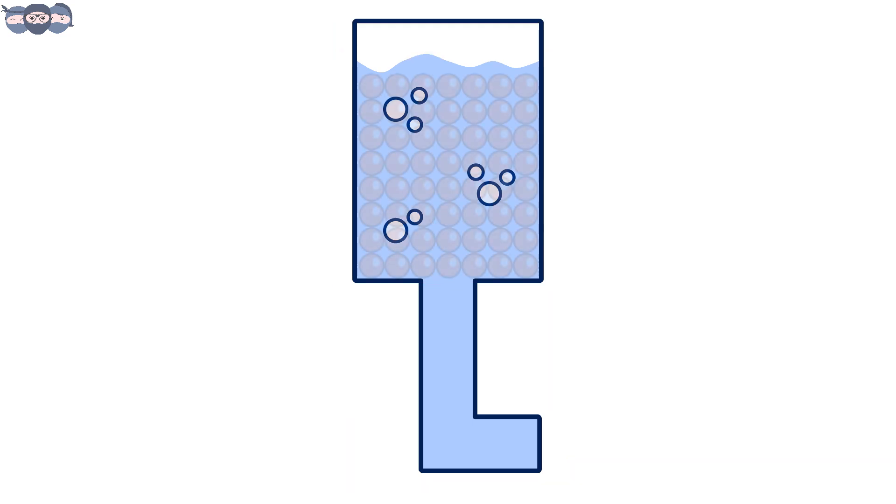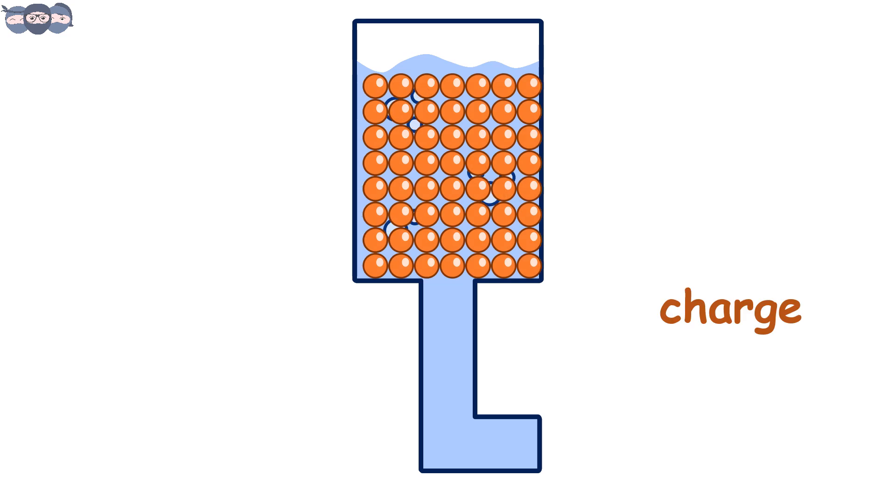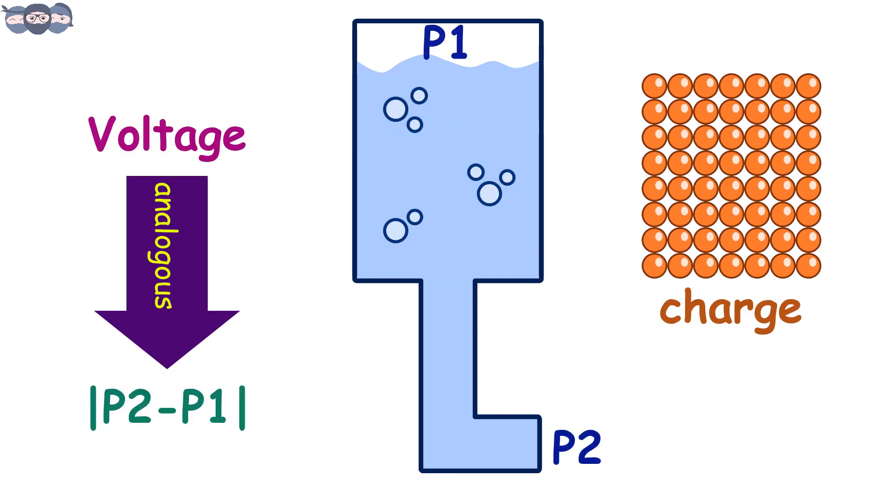The amount of water can be considered as charge. Voltage refers to the pressure difference in water at the top of the tank and at the exit of the pipe.